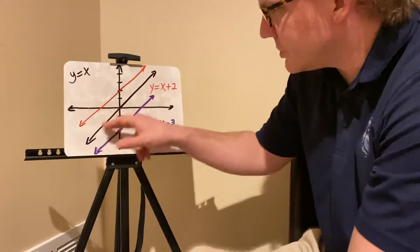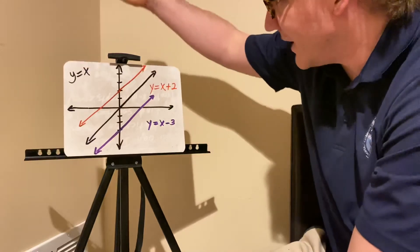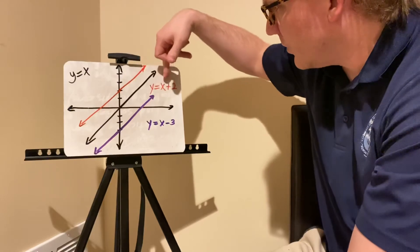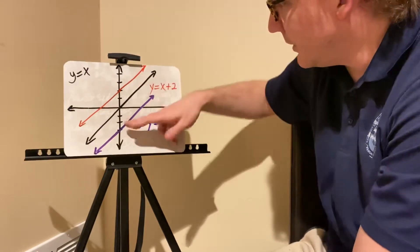This black line is the kind of proportional relationship we've been looking at, where you have y equals x, or y equals 1x. And then this red line is where you have y equals x plus 2. And notice the difference.